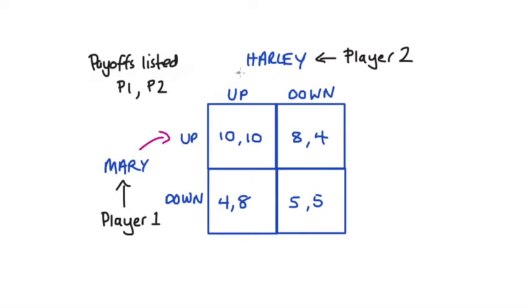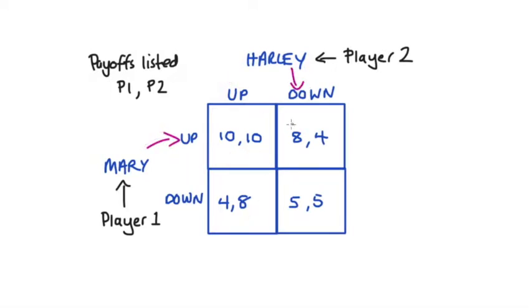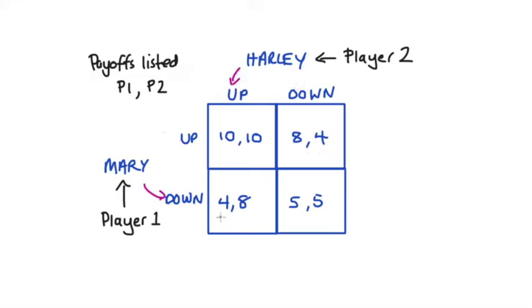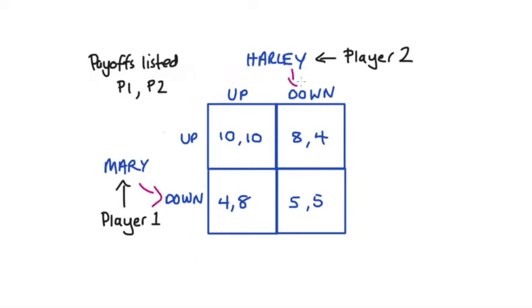So in our game if Mary and Harley both play up then both players get 10 as a payoff. If Mary goes up and Harley goes down then Mary gets eight and Harley gets four. If Mary goes down and Harley goes up then Mary gets four and Harley gets eight. If both players go down then both will get five.